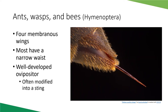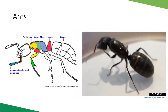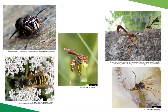Ants are identified by their elbowed or geniculate antennae and a node — a small bump — between the thorax and the larger abdomen segment. This node is very distinctive; if you see a node on an insect, it's going to be an ant. Ants can have one or two nodes, which becomes important when identifying ants further down to species.